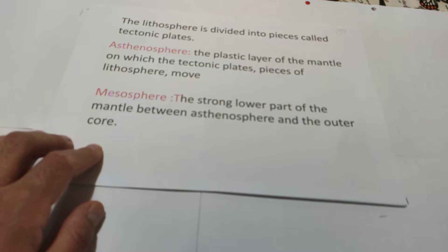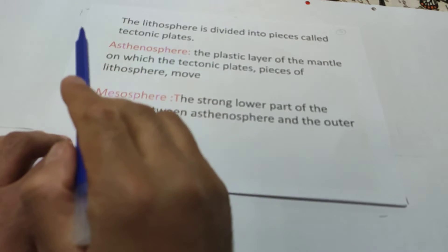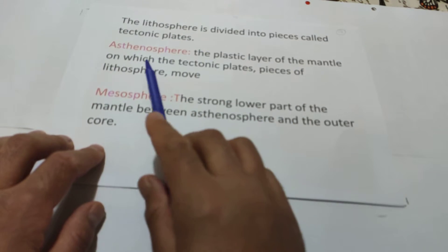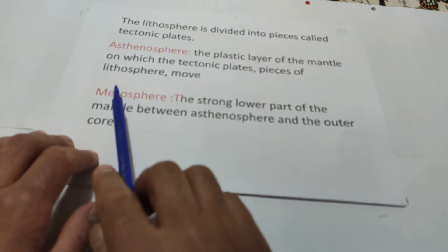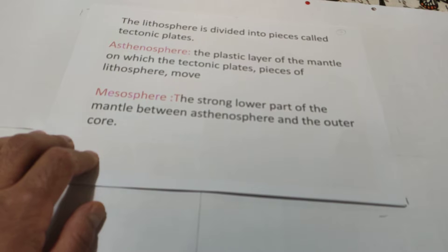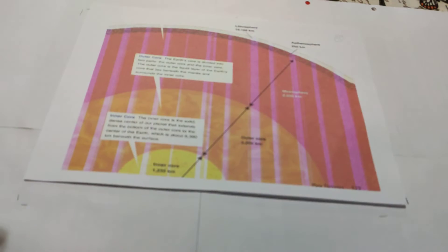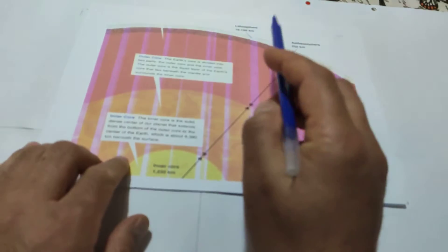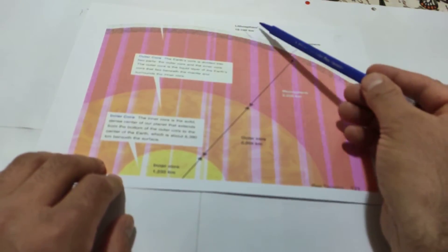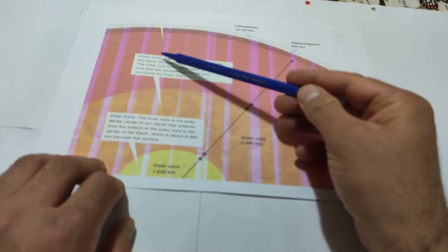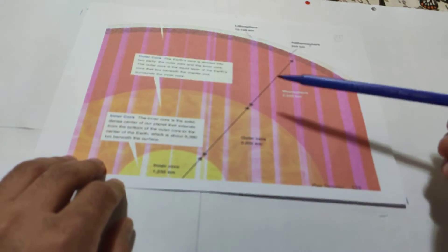Another physical layer of earth is the asthenosphere. The asthenosphere is the plastic layer of the mantle on which the tectonic plates - pieces of lithosphere - move. The mesosphere is the strong lower part of the mantle between the asthenosphere and the outer core. These are five layers of physical structure: lithosphere, asthenosphere, mesosphere, outer core, and inner core.